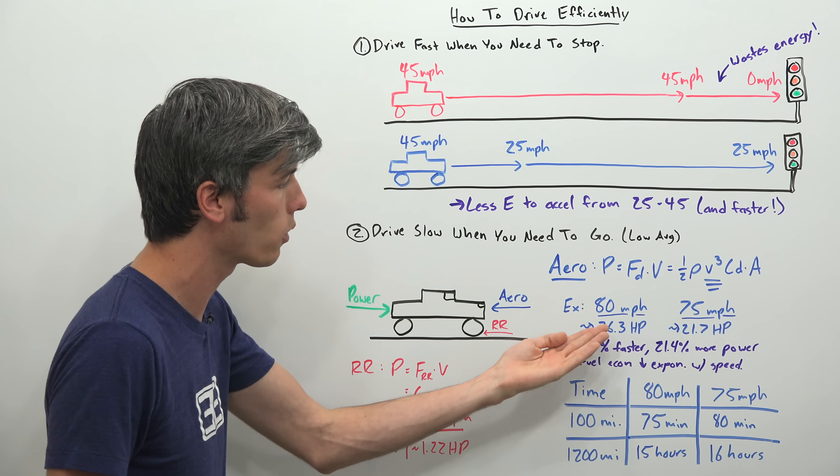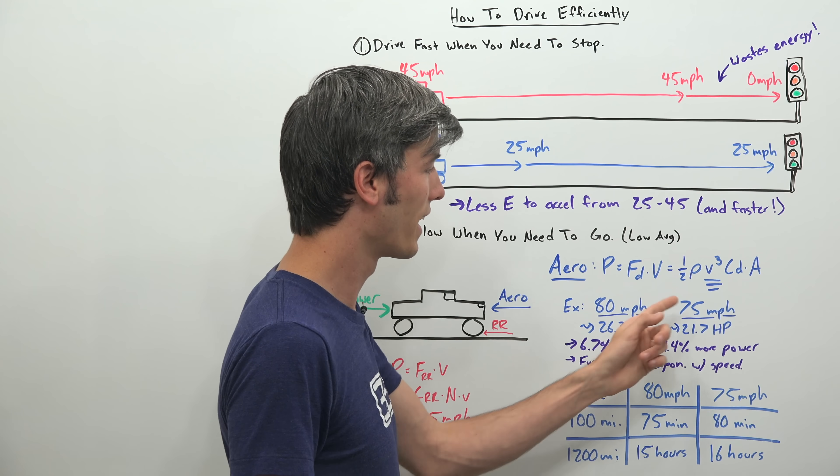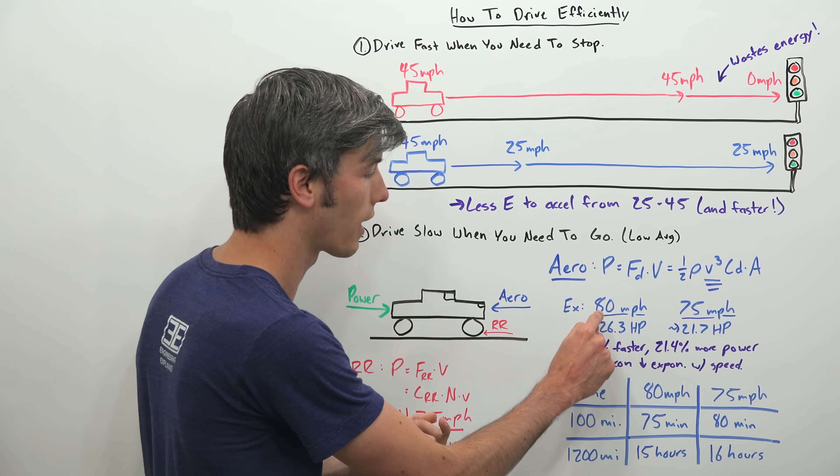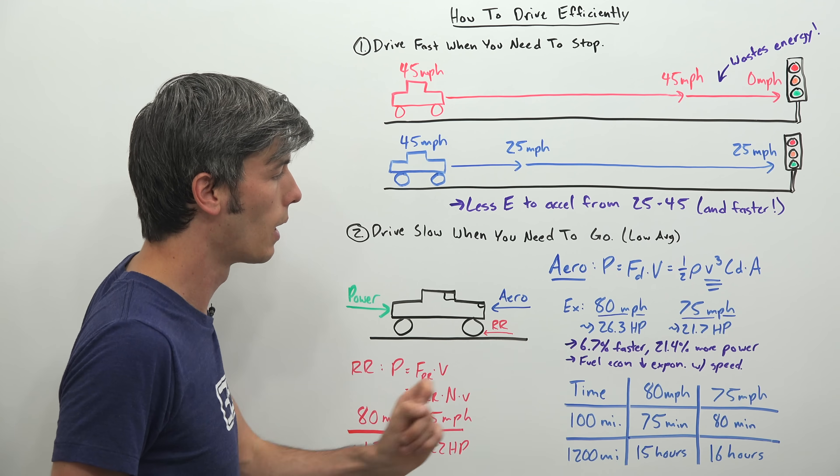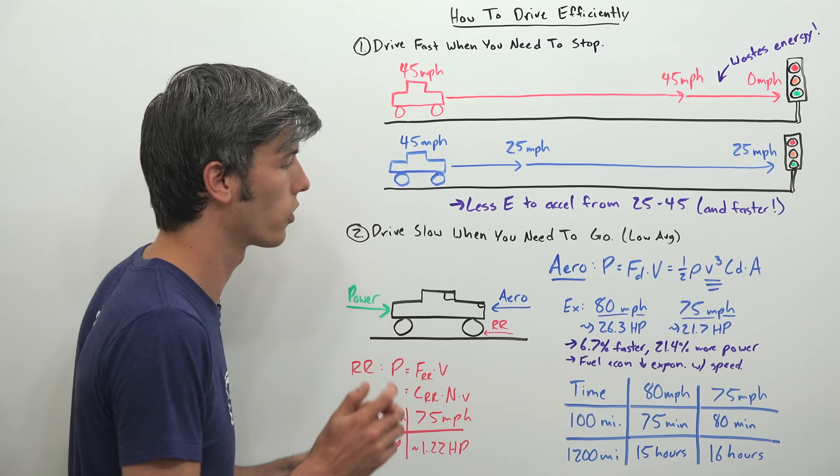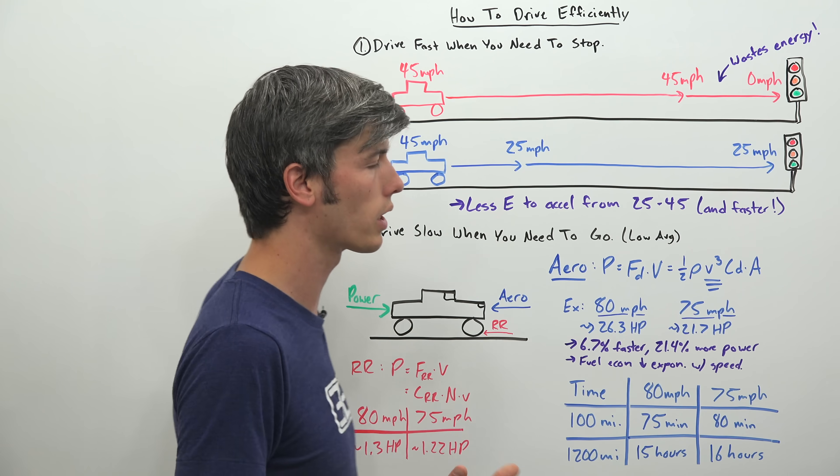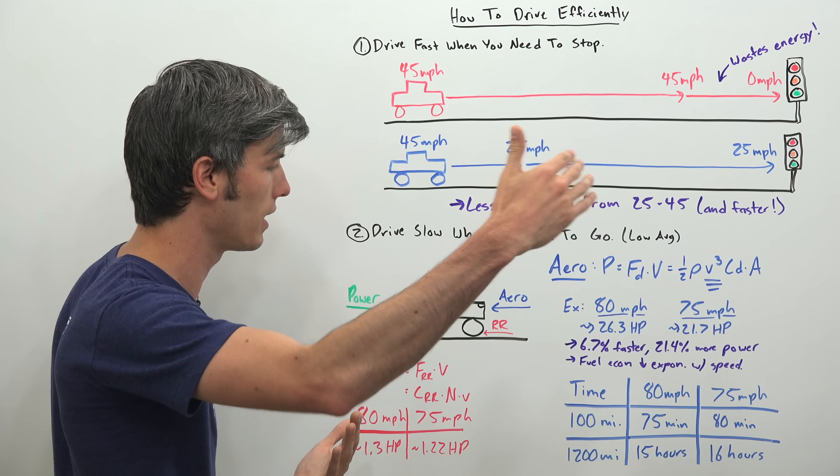It would need 26.3 horsepower at 80 versus 21.7 horsepower at 75. So we're traveling 5 miles per hour faster, just 6.7% faster, but we need 21.4% more power in order to do it. So what that means is your fuel economy is going to exponentially decrease as your speed increases.